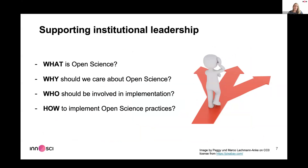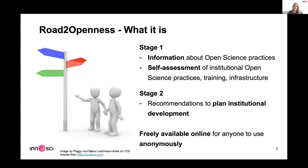To support institutional leadership, we needed to answer four basic questions: What is open science? Why should they care about it? Who should be involved in implementation at the institutional level? And how to implement open science practices in the first place? These are the starting points for developing Road to Openness.